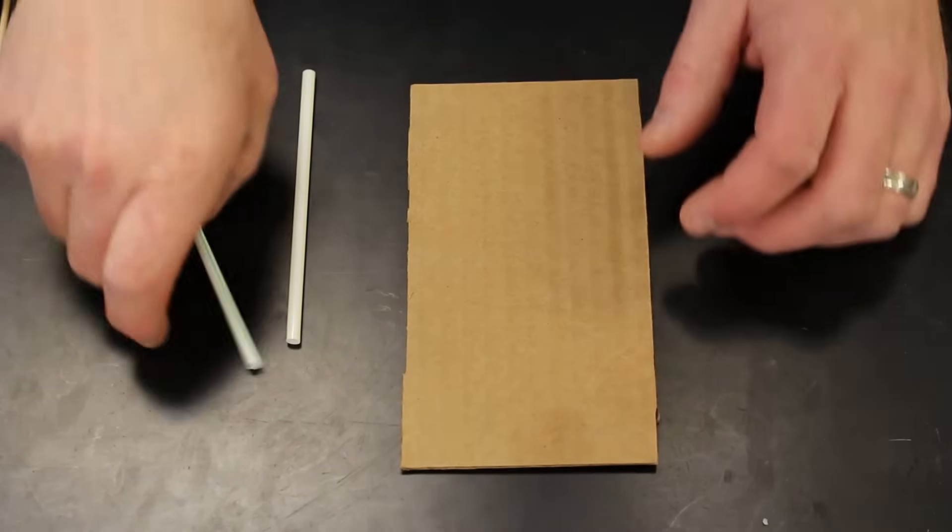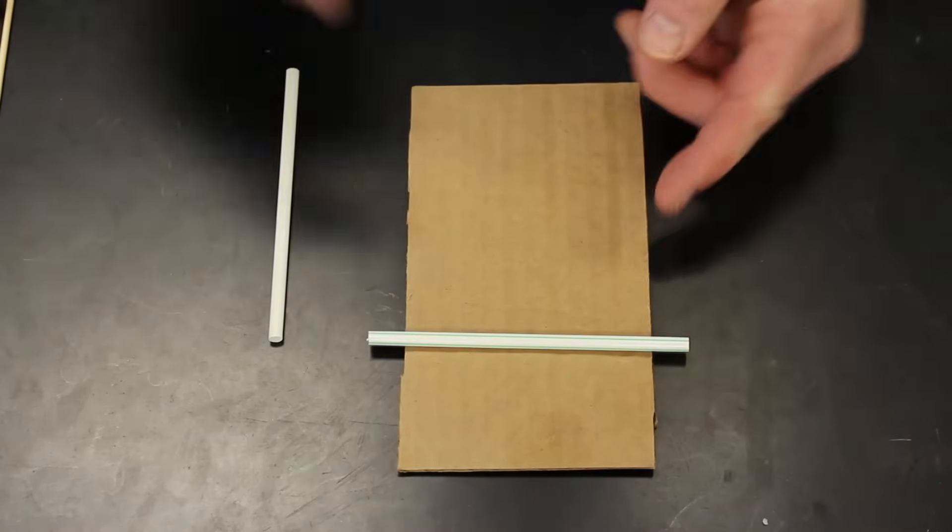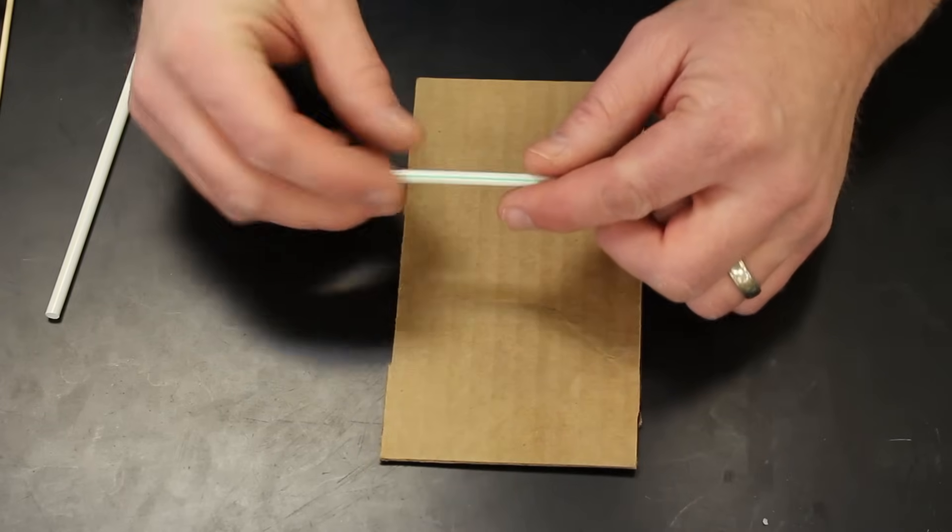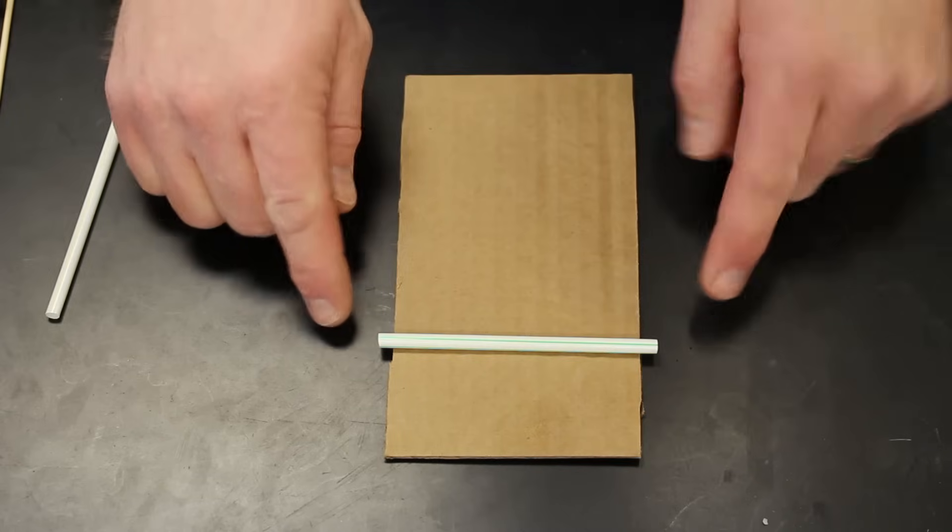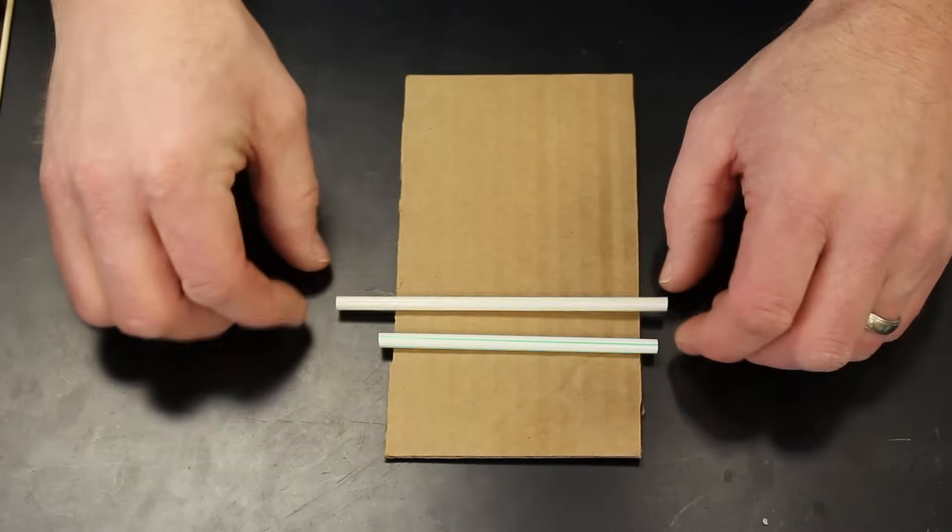Our first step is to trim the straws so they're a little bit wider than our piece of cardboard. When you cut them, make sure you have a sharp pair of scissors, and you want a clean cut that's square to the edge. You can see now that I have it a little bit longer than both sides of the cardboard, and I want to duplicate that on the next straw.